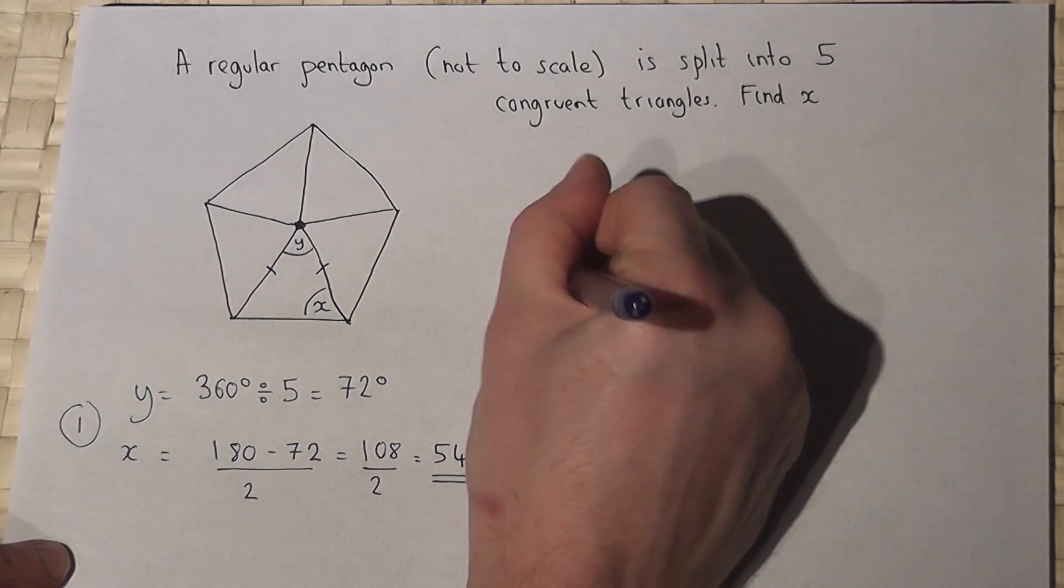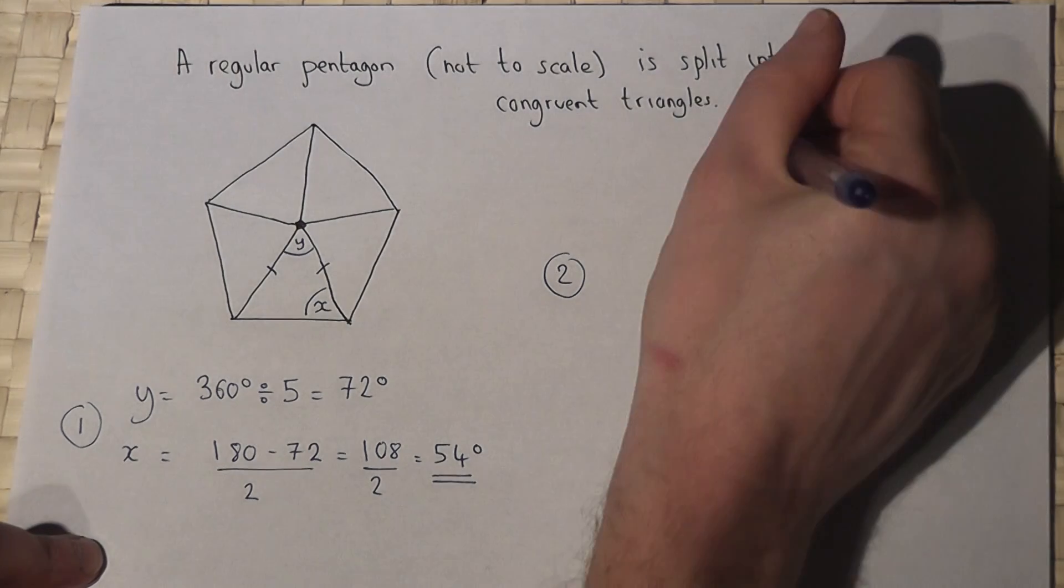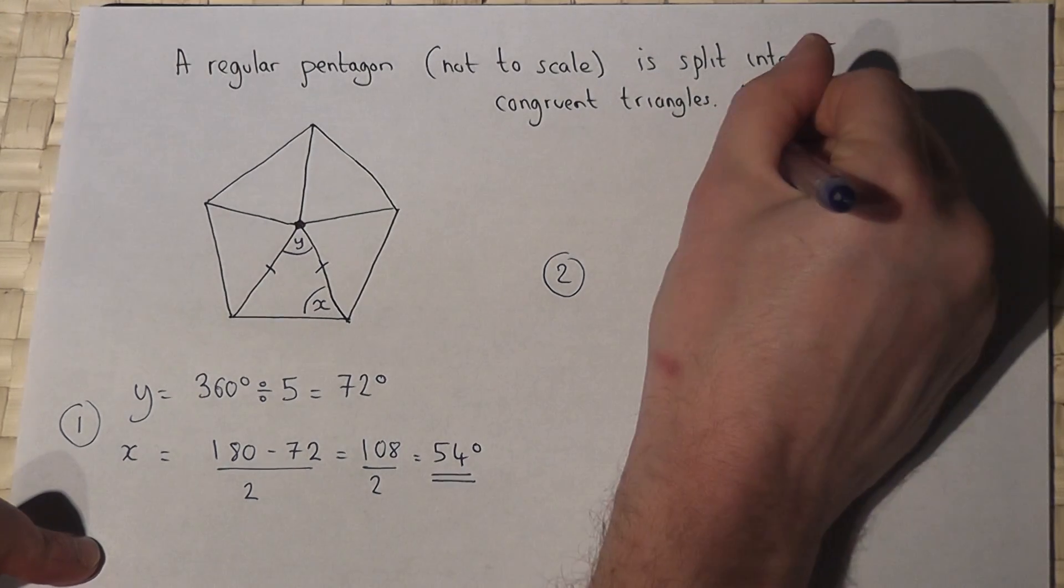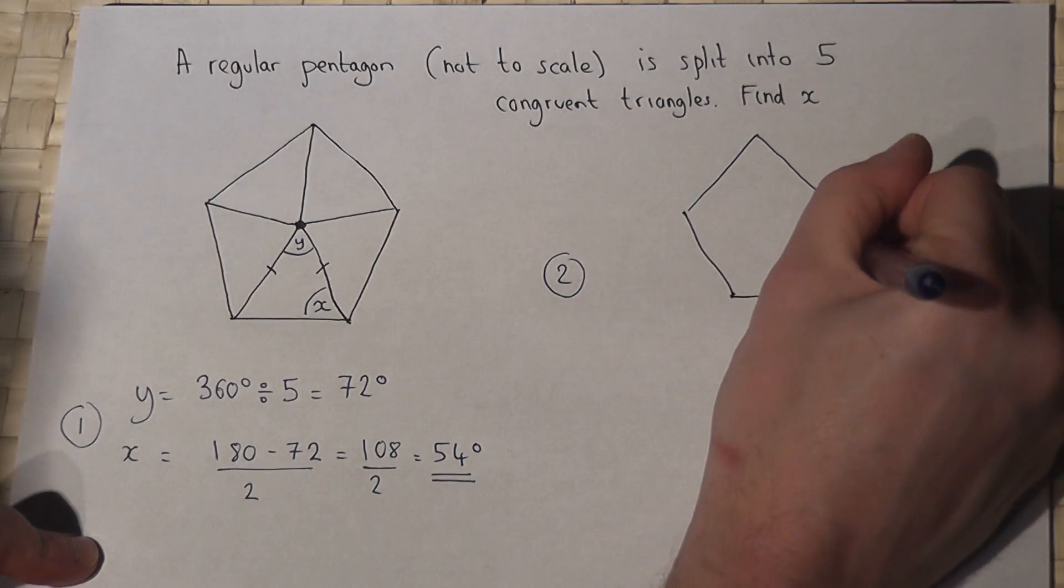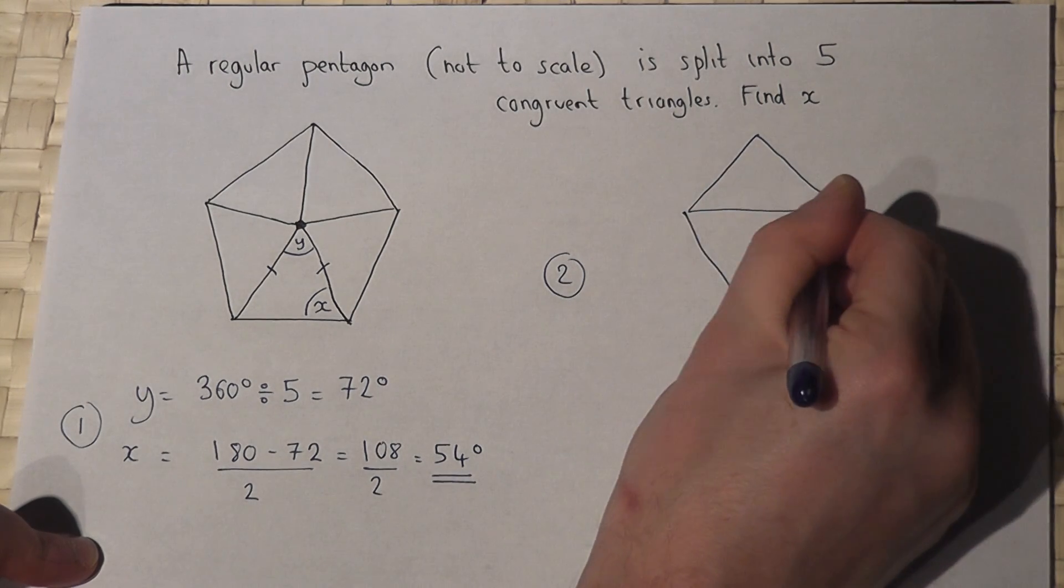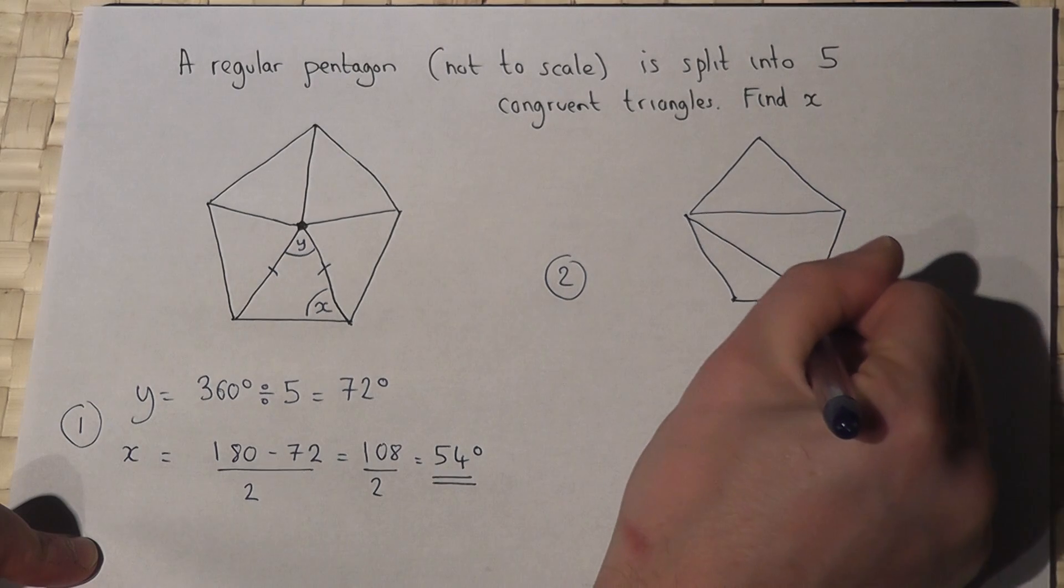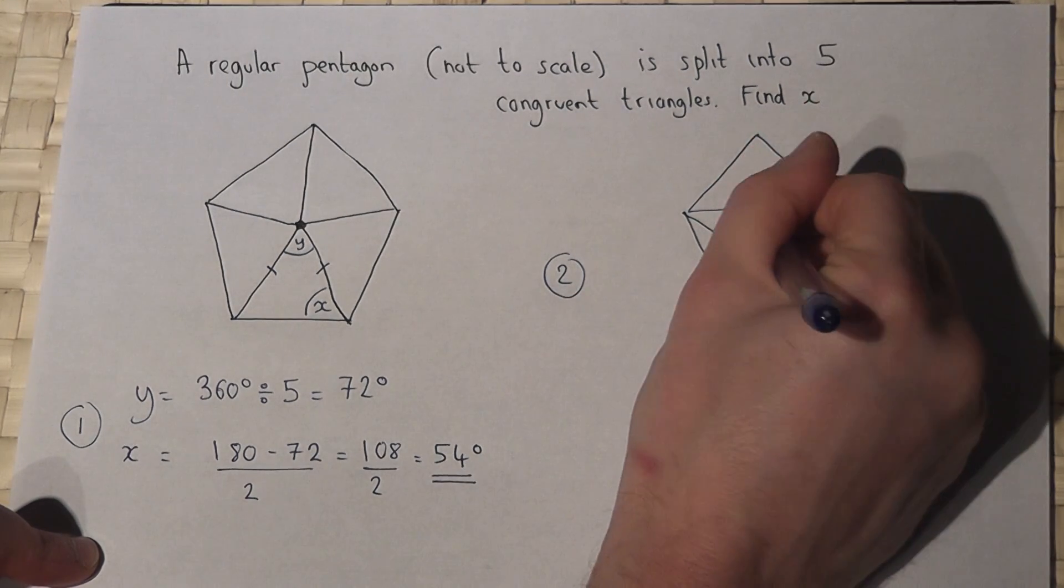Now option two adopts a different approach. For option two if we consider again our pentagon, this pentagon can be split into three separate triangles each one worth 180 degrees.